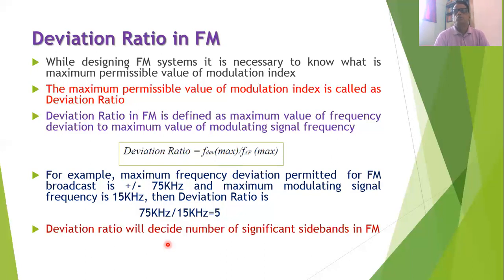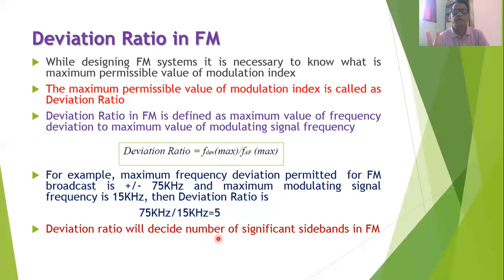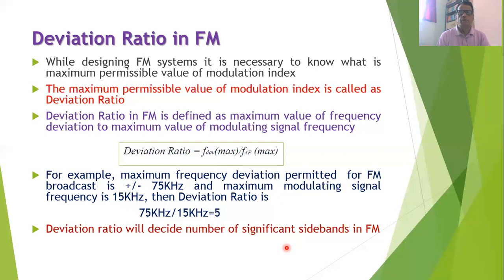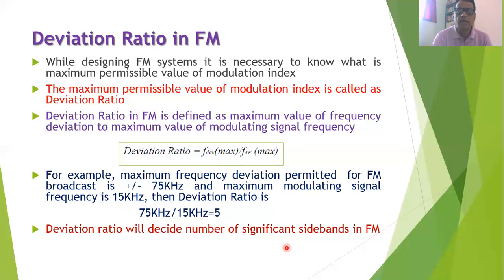The deviation ratio in FM is an important parameter because it determines the number of significant sidebands in FM. In AM there are only two sidebands — upper and lower — but in FM the number of sidebands is theoretically infinite. Practically, we consider only the significant sidebands whose amplitude is sufficiently high, and this number depends upon the value of the deviation ratio.